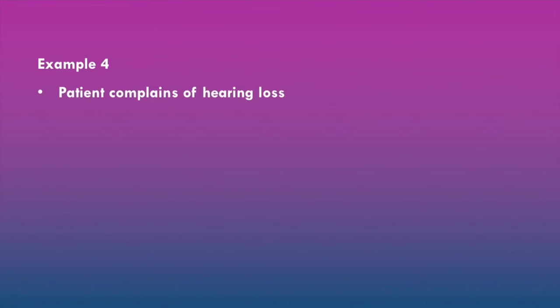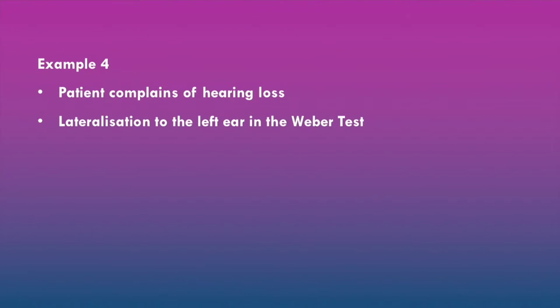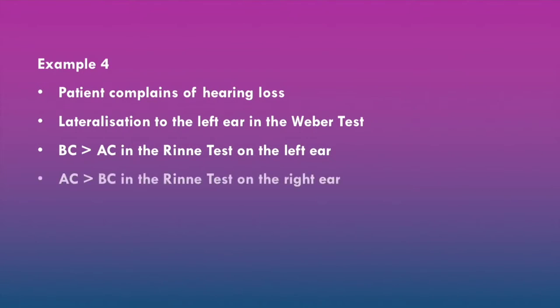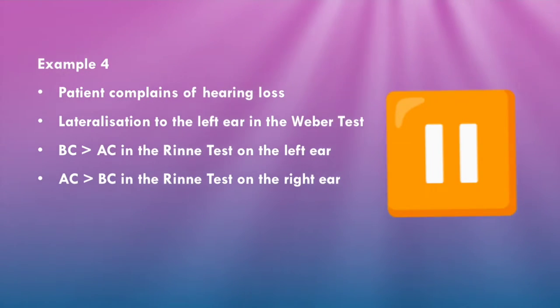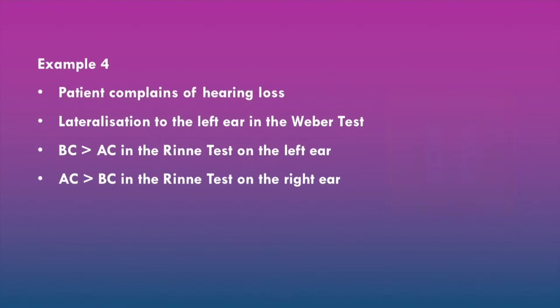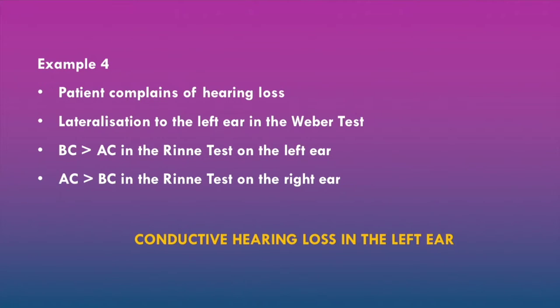In example four, we have a patient who complains of hearing loss. There is lateralization to the left ear in the Weber test. Bone conduction is greater than air conduction in the Rinne test on the left ear, and air conduction is greater than bone conduction in the Rinne test on the right ear. The likely diagnosis is conductive hearing loss in the left ear and normal hearing in the right ear.